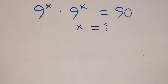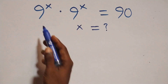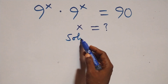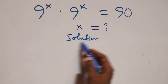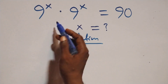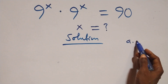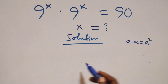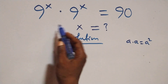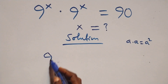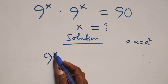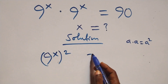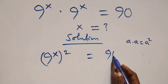Hello, you are welcome. How to solve this nice exponential equation. What we have here: a times a can be written as a squared — the same thing multiplying gives us 9 raised to power x, all squared, equals 90.